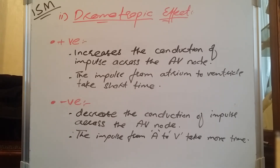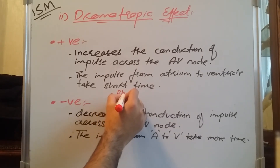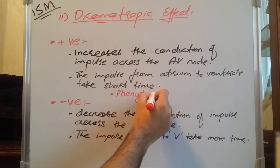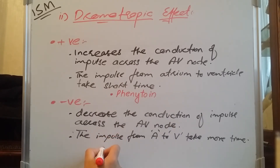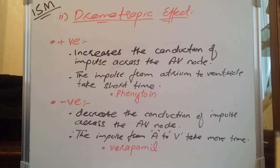The drug which causes the positive dromotropic effect is Phenytoin, and the drug which causes the negative dromotropic effect is Verapamil. These two drugs act on the cells of the atrioventricular node and either enhance or reduce the conduction of impulses across the AV node.